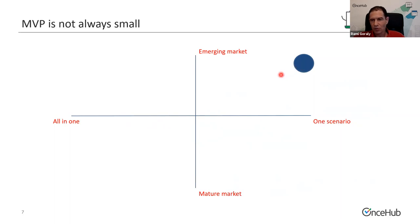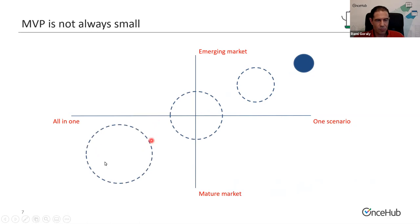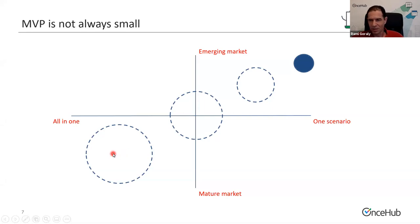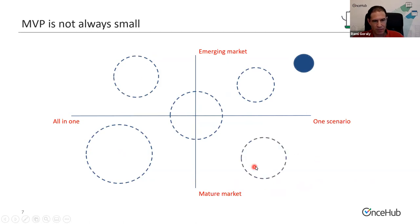You need to map where you are. Look at your product, understand which use cases it is automating, and also look at the market. The MVP scope increases as you go toward a mature market and toward an all-in-one approach. If you're in a mature market doing an all-in-one approach, your MVP will have to be very large — that's an extreme case more suited to a big company like Google entering a new market, not a startup.